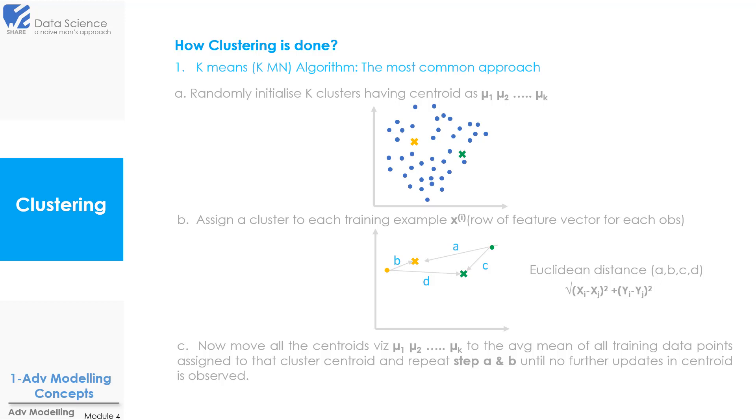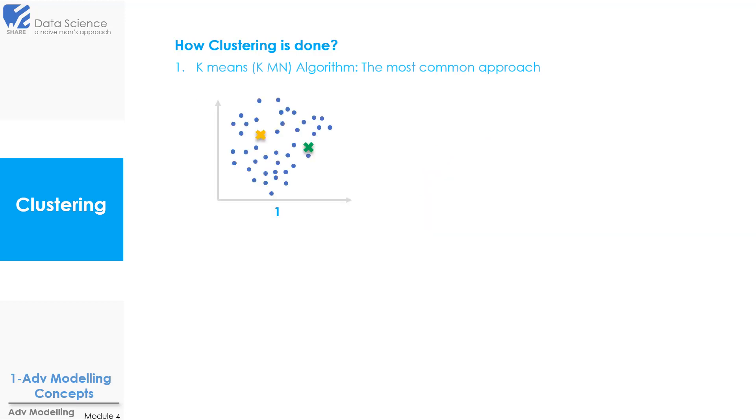Now let's understand this with the help of an example. So in the first step we initiated two centroids. Then we measured the distance of each observation and assigned clusters based on the minimum Euclidean distance. Now as you can see in the first figure we have all the points in blue color, but in figure 2 we have few points in orange color and few in green color. This shows that they have been assigned into orange cluster or green cluster.